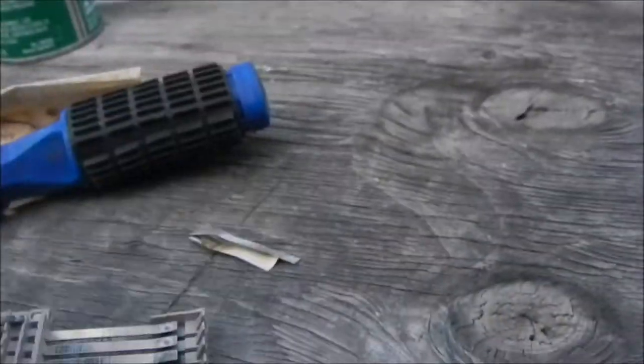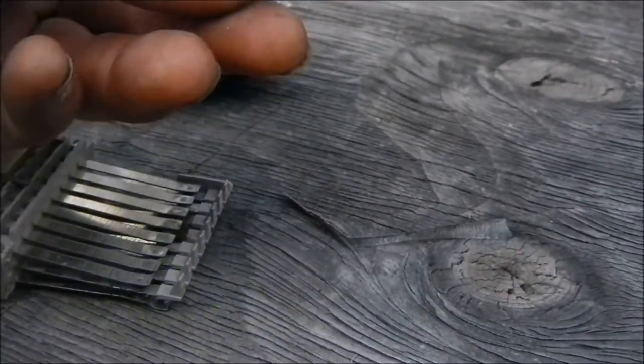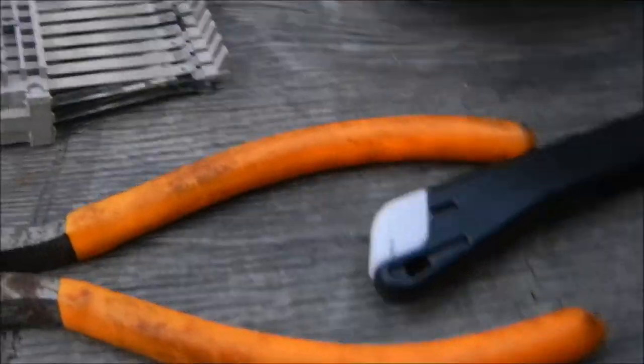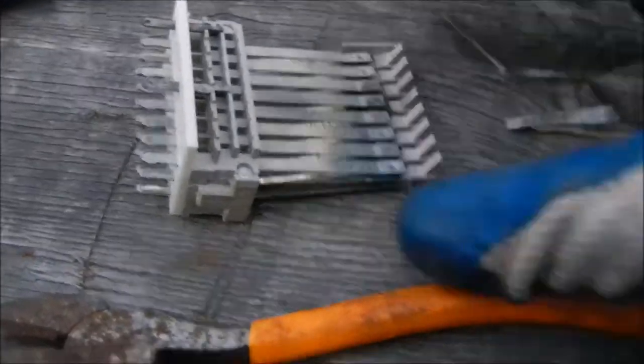And so what I normally do is I'll cut a small piece of the sandpaper and fold it up and then stick it in between the points. And basically we're buffing the points a little bit, just taking off the rough edges.